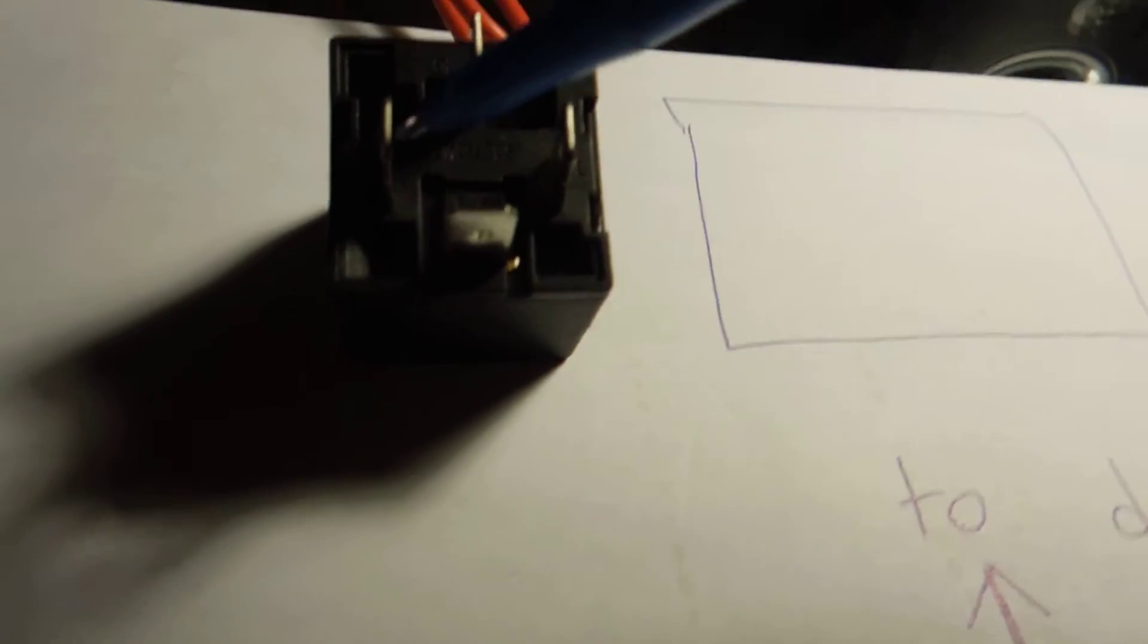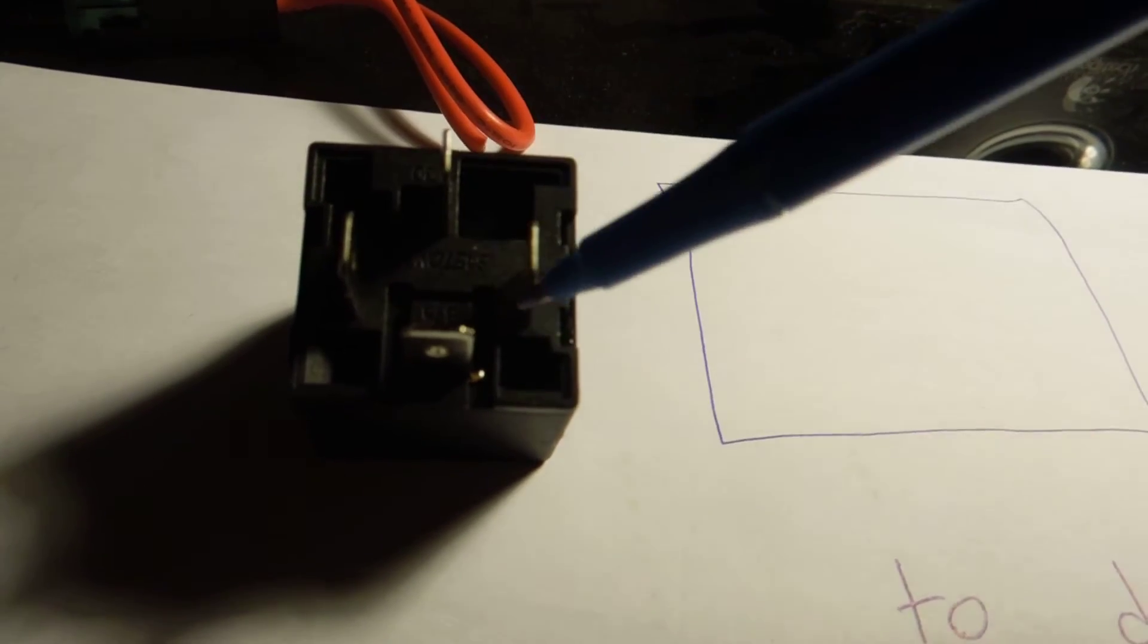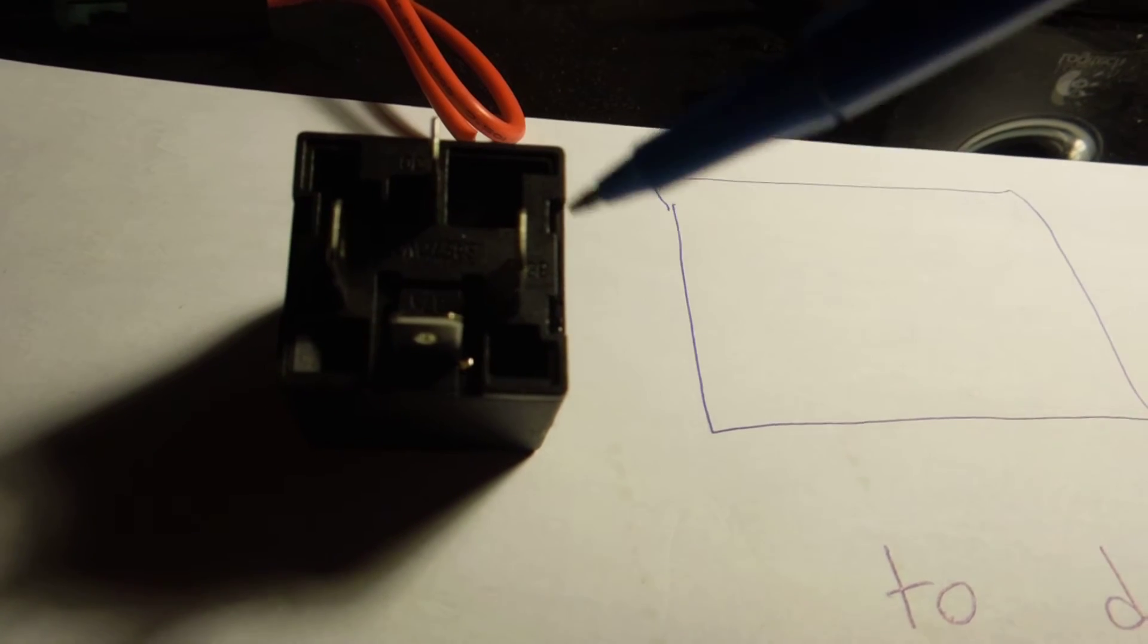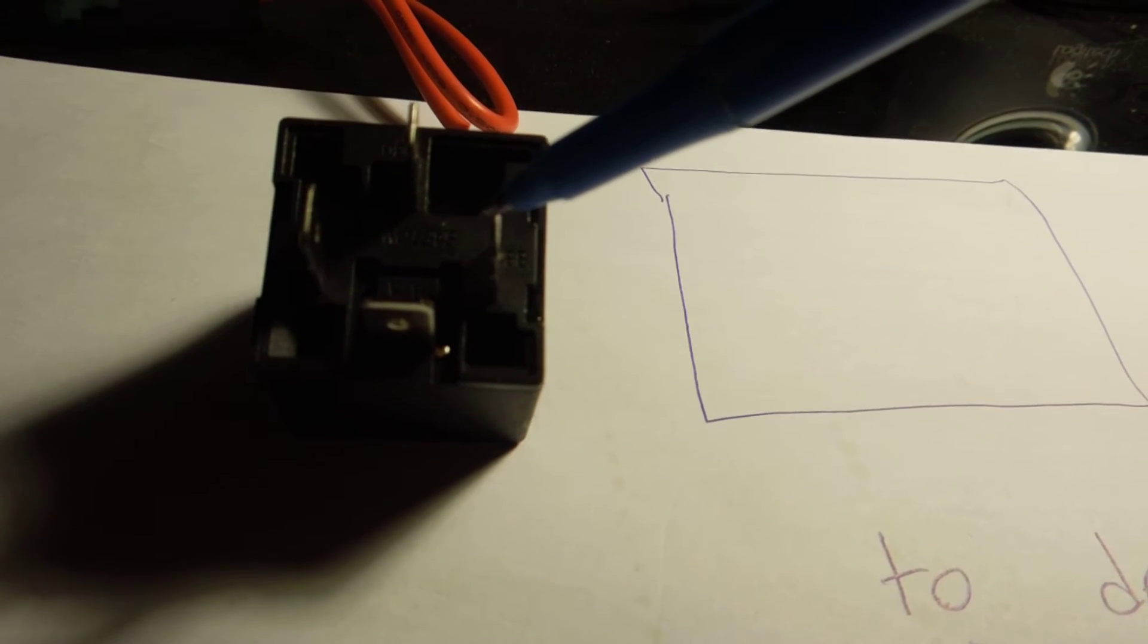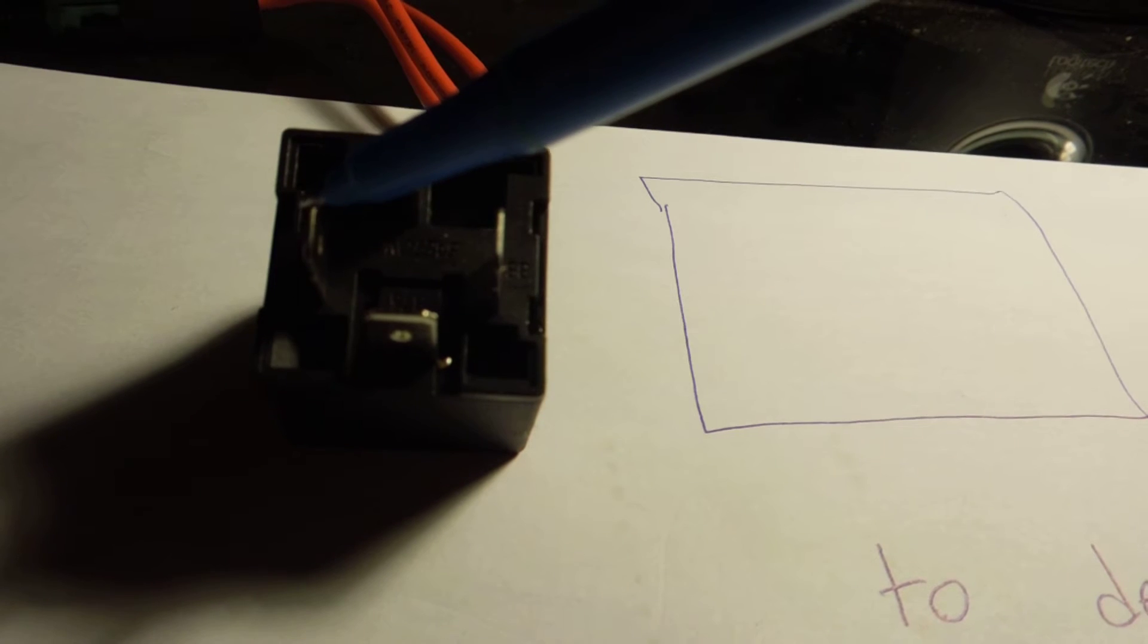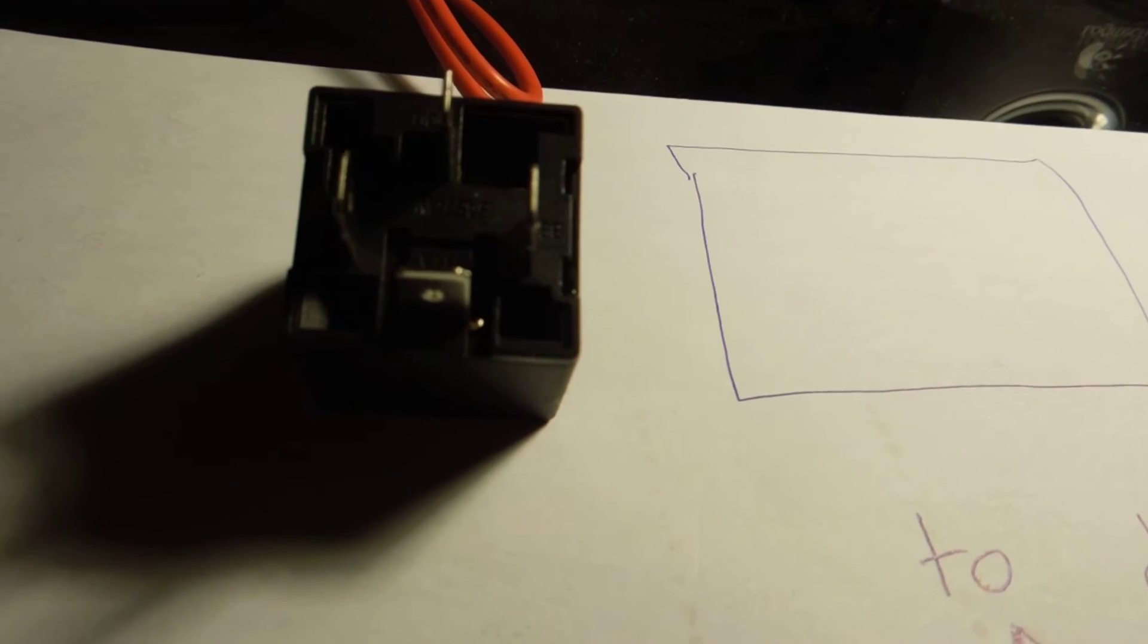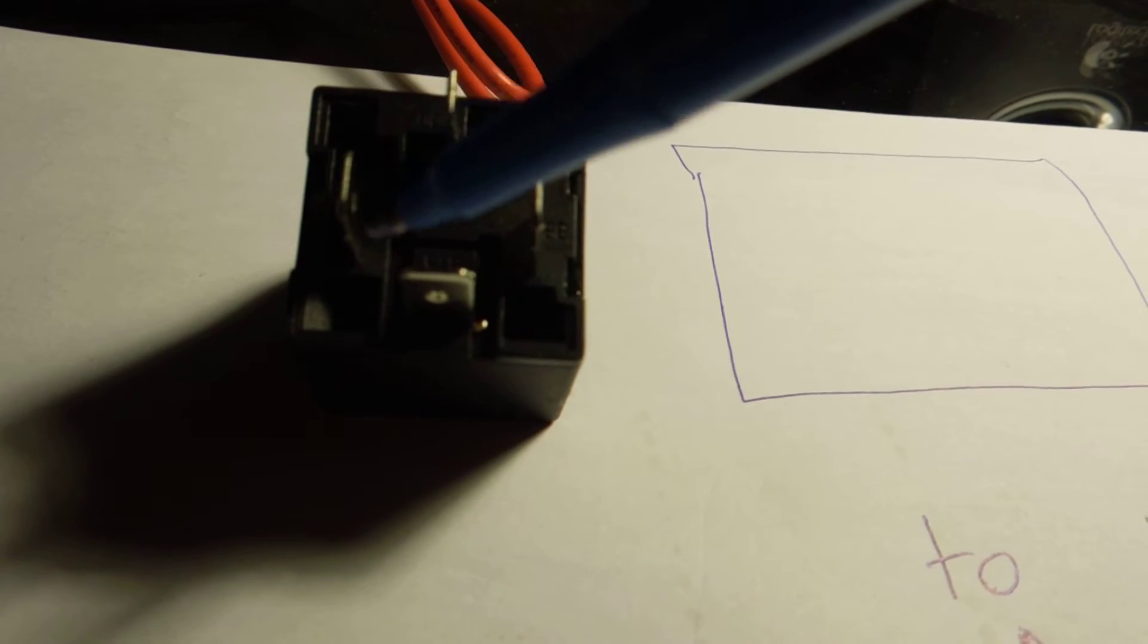All right, so now these two, like I said, 85 and 86, always have to be opposites. So this one, if you're doing a negative trigger, then your negative trigger will be right here and you'll put positive to right here. And if you're doing a positive trigger, which is what we're going to be doing with the remote wire, then you'll put it right here, and then you'd have ground on the other side.